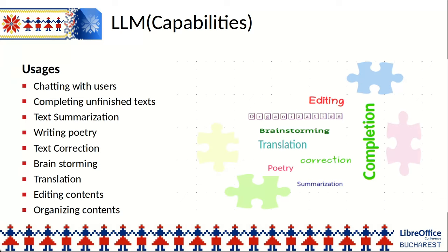Capabilities. LLMs have many capabilities. Some of the most important: LLMs can chat with users, complete unfinished text, summarize text, write poems, or correct our text. Brainstorming is possible with LLMs. They can translate text, and they can edit and organize content.